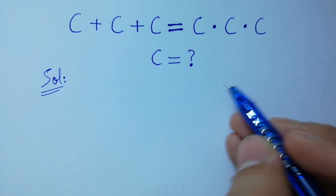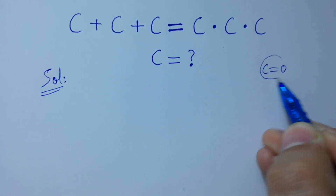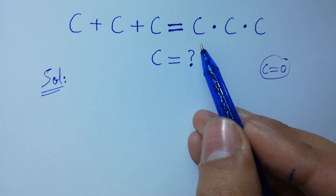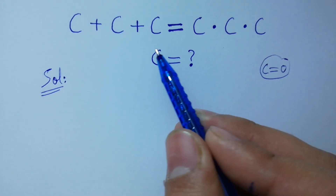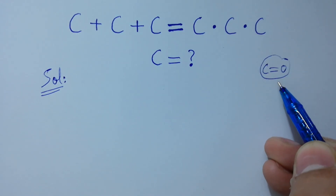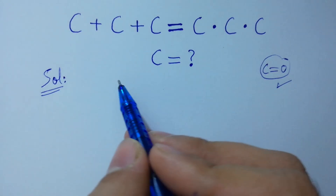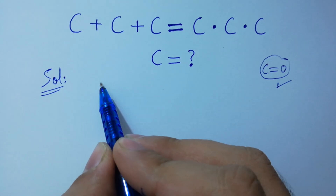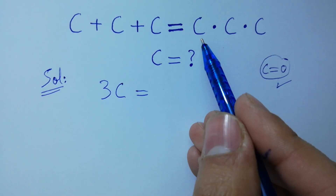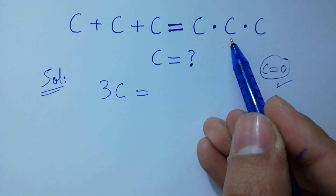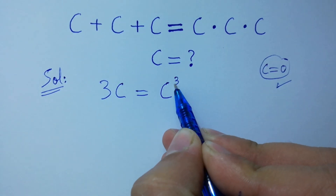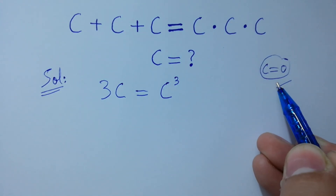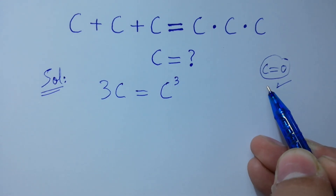If we put c equal to 0, you can see 0 plus 0 plus 0 which is 0, and on the right hand side 0 times 0 times 0 which is 0. So 0 equals 0, which shows that c equals 0 is a solution. But c plus c plus c on the left hand side is 3c, and on the right hand side c times c times c gives us c cubed. Since this has power 3, it has three solutions — one solution is c equal to 0, and there are two more.